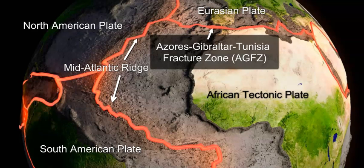That fracture zone is called the Azores-Gibraltar-Tunisia Fracture Zone, or the AGFZ. This is a known fracture zone and part of the larger system of tectonic margins and boundaries that separate the plates — either continental or oceanic. The majority of earthquakes occur around these boundaries or margins where plates are moving against each other or away from each other.